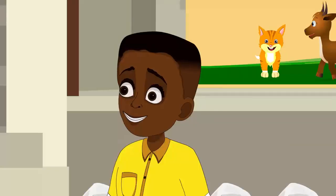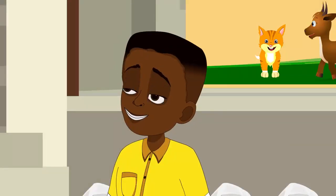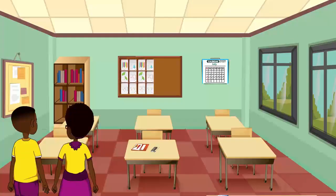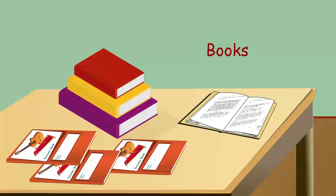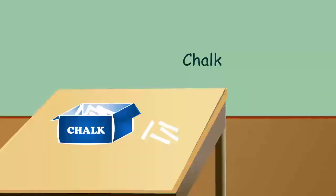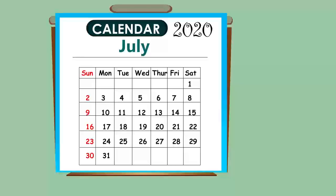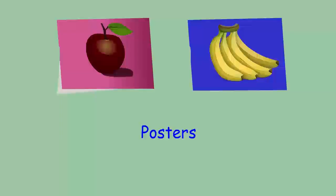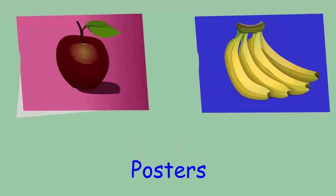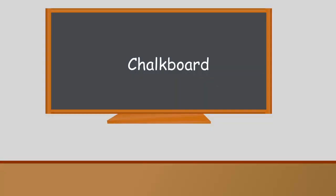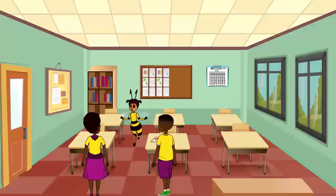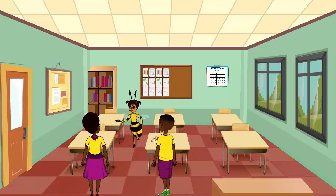Let us go into the classroom to see more living things. There are many things here: chess, books, chalk, calendar, posters, bookshelf, and chalkboard. All these things you see in the classroom are non-living things.